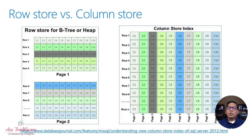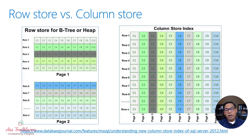With the internal storage architecture of columnar storage, as we just discussed, query performance is improved several folds over traditional row-oriented storage. You must be wondering how a different physical layout — storing the same data in columnar format instead of traditional row format — can improve performance several times.